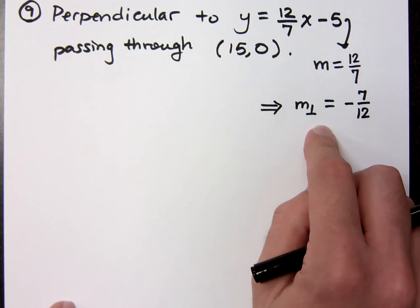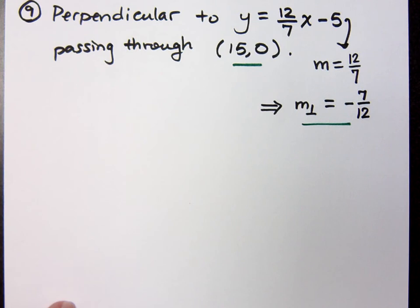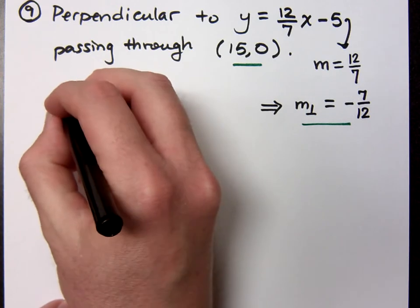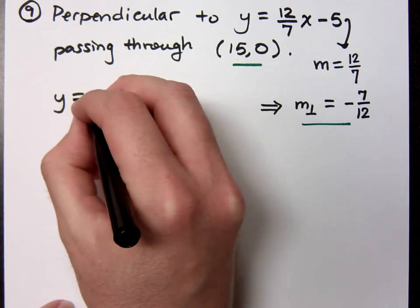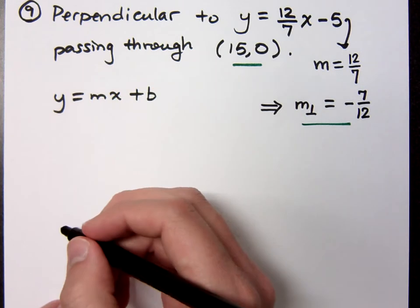Now, use this slope and use that point. So I know you guys like to use the slope-intercept form, so let's do that. y equals mx plus b. Plug in what you have here.